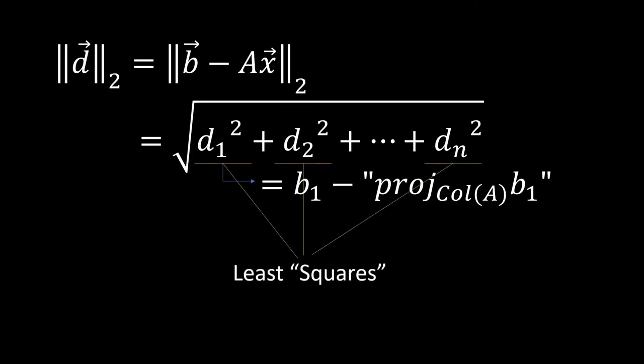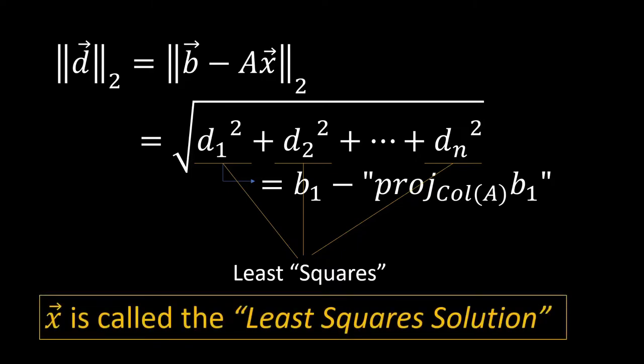What this is doing is it's minimizing each one of these squared terms right here, and so this is where we get the name least squares. And therefore, our X vector is oftentimes referred to as the least squares solution, since each one of these terms is going to be the least possible squared value in this difference vector.